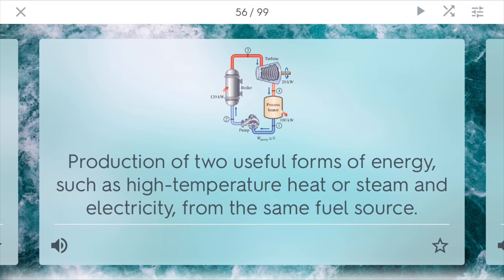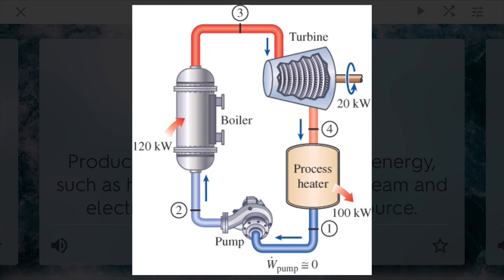Cogeneration. This is an energy production method that produces two useful forms of energy, such as high-temperature heat or steam, which can be used to drive other types of physical processes like more turbines, and also electricity from the same fuel source, such as coal. This electricity can be directly sent to homes for use. For example, you have a boiler that can turn a turbine but can also pump and heat other things as well.